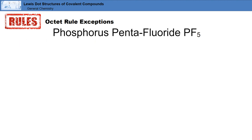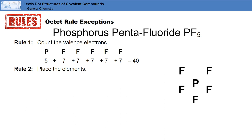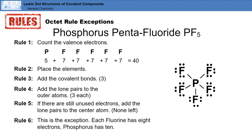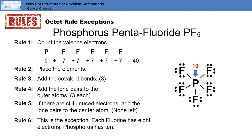Next, we'll look at phosphorous pentafluoride. Just as with boron trifluoride, we'll apply the first five rules. Then we come to rule six, which is again where we find the exception to the octet rule. Check the number of electrons around each atom. Each fluorine atom has eight electrons, but the phosphorous atom has ten. This is the Lewis dot structure for PF5.